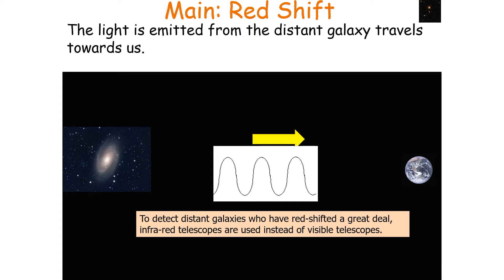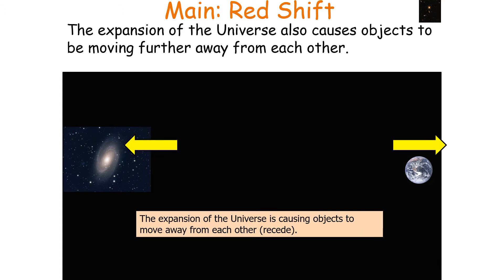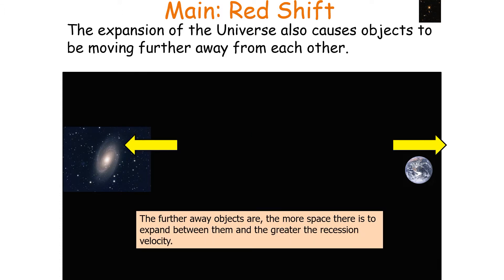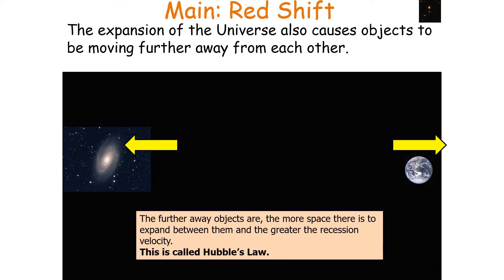The expansion of our universe is causing objects to move away from one another — they recede. The further away the objects are, the more space there is to expand between them, and the greater the recession velocity. This is Hubble's Law.